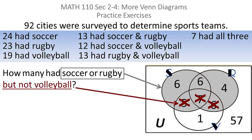Now, I had an earlier question where I removed volleyball from the intersection of rugby and soccer. Now, I'm removing volleyball from the union of rugby with soccer. And so that leaves me six, six, and four, which adds up to 16.